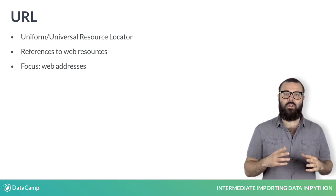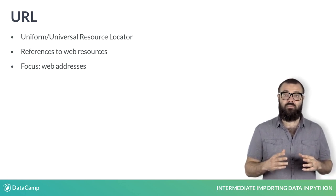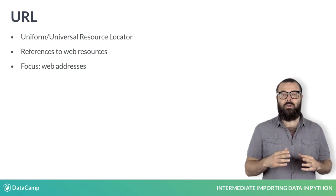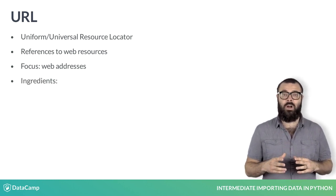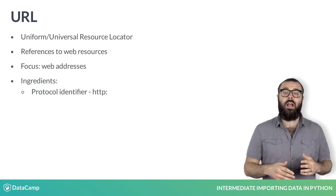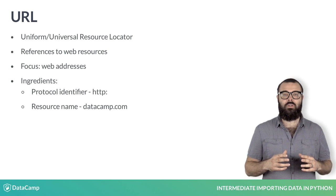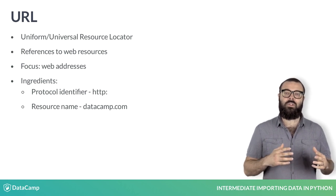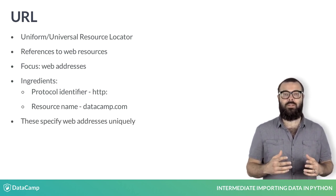We'll currently focus on those URLs that are web addresses, or the locations of websites. Such a URL consists of two parts: a protocol identifier and a resource name such as datacamp.com. The combination of protocol identifier and resource name uniquely specifies the web address.